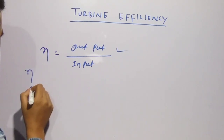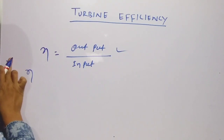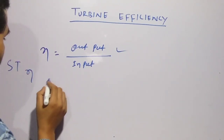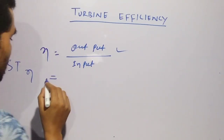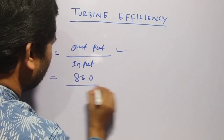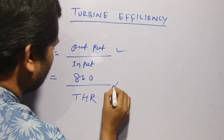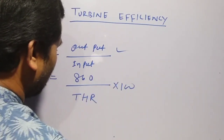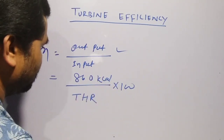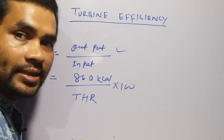For steam turbine, I write: ST efficiency is equal to 860 divided by THR, into 100. Here, 860 is in kilocalories, and THR means turbine heat rate.